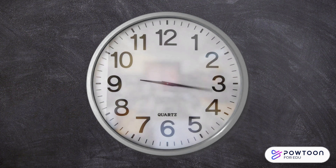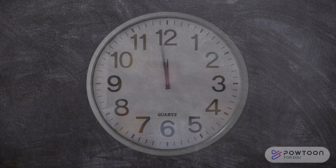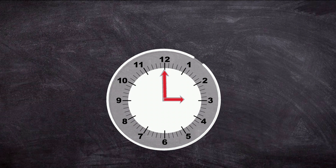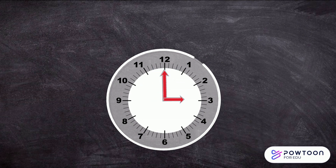The direction the hand goes around the clock is called clockwise. Let's look at this clock together. Long hand at 12, o'clock. And the short hand is pointing to the three. Three o'clock!